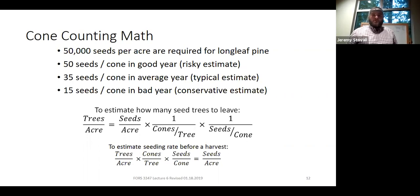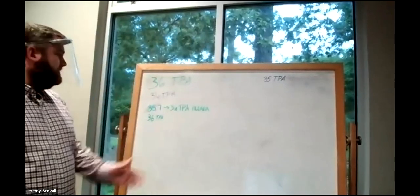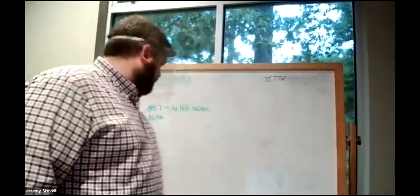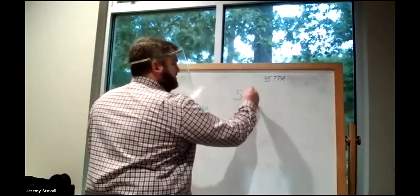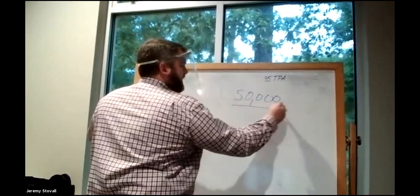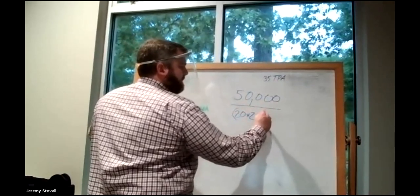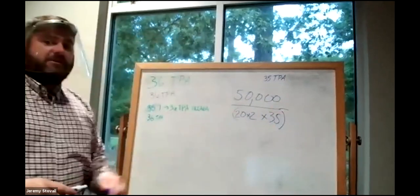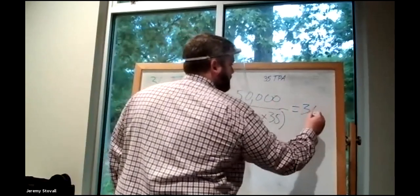You all came up with about 36 trees per acre. The math is straightforward: 50,000 seeds per acre divided by (20 counted cones × 2, because you always double) times seeds per cone (35) equals 35.7, which we round up to 36 trees per acre.